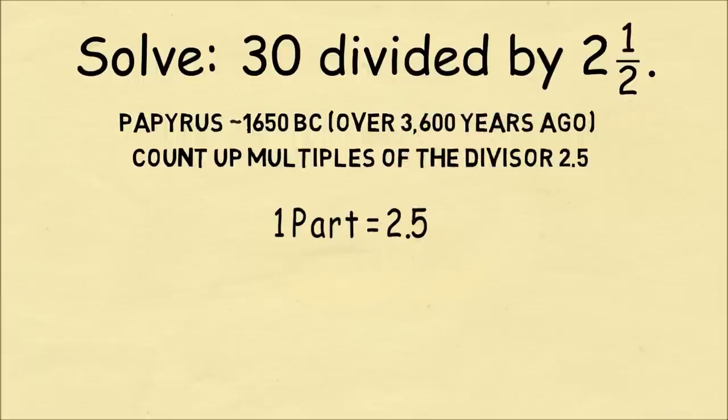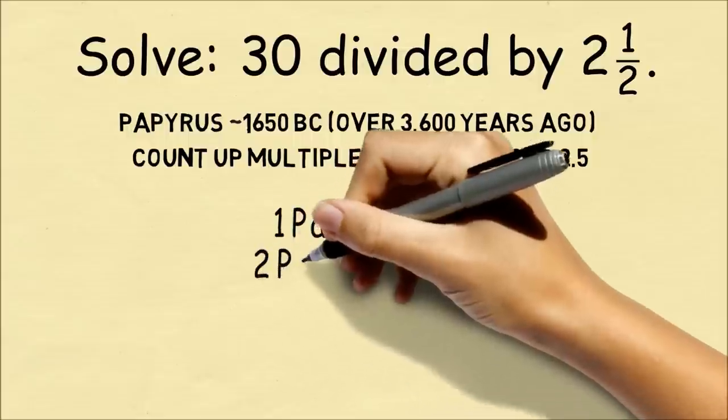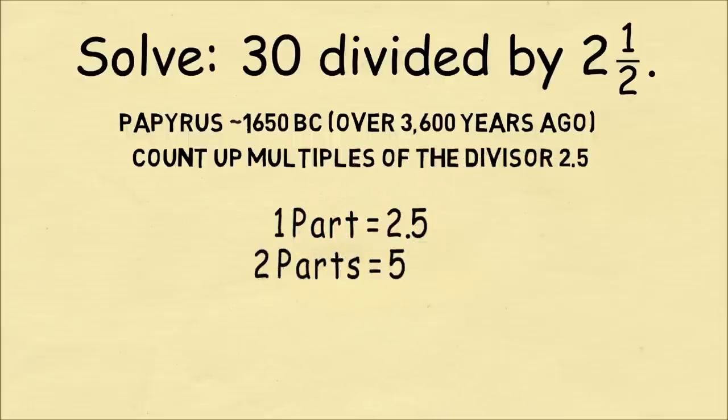So they started out by saying one part is 2 and a half. And we're going to count up parts until we get to 30. So 2 parts of 2 and a half, we double 2 and a half to get 5.